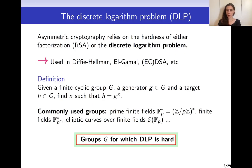The discrete logarithm problem is one of the two major mathematical problems on which the security of asymmetric cryptography protocols is based, the other one being factorization. The discrete logarithm problem can be found in key exchange protocols such as Diffie-Hellman, El-Gamal, or signature protocols such as ECDSA, DSA, etc.